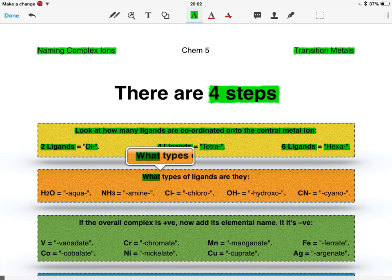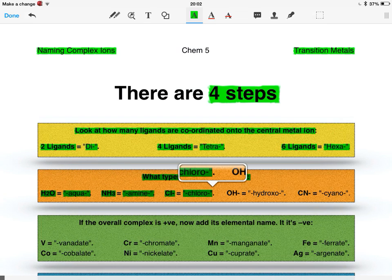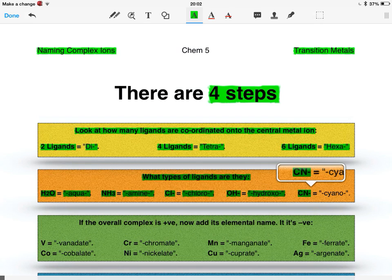Next we look at what types of ligands they are. So if it's a water ligand, we say aqua. Ammonia, we say amine. Chloride, chloro. Hydroxide, hydroxo. And cyanide, cyano.